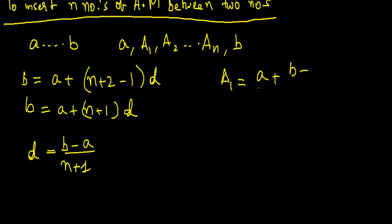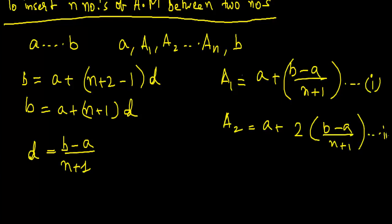Now we are just putting the values here. Let us consider this as equation 1. A2 will be a plus twice [(b minus a)/(n plus 1)], equation 2. And AN will be a plus N times [(b minus a)/(n plus 1)], equation 3.